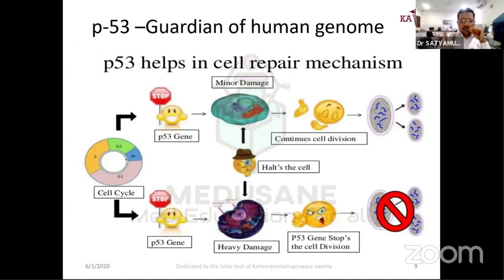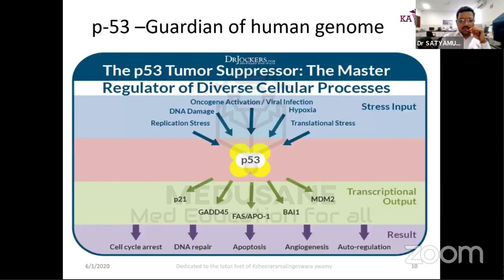In summary: if there is minor, repairable damage, the cell proceeds to division. If there is heavy damage to the genome, p53 stops the cell and it undergoes cell death. If p53 is destroyed, there is nobody to stop abnormal DNA — any problem in p53 can lead the cell into an abnormal cell cycle phase and eventually a cancerous state.